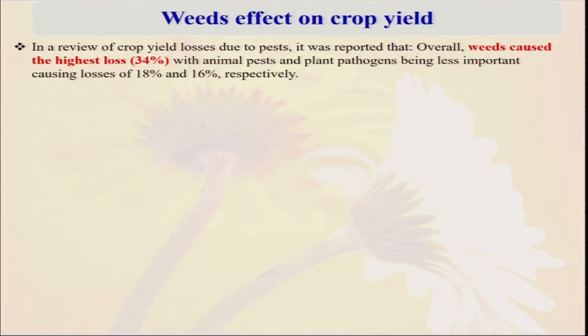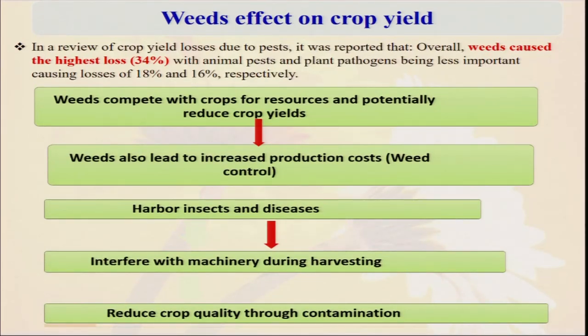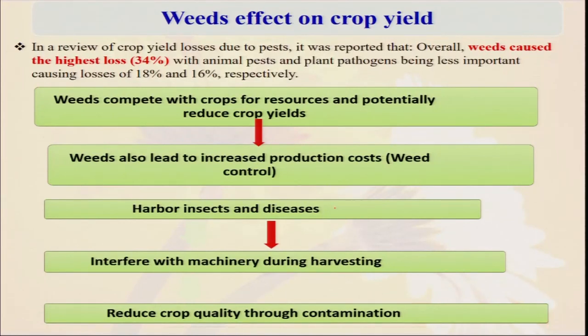Weeds effect on crop yield: about 34 to 37 percent losses as I have already told. Weeds cause major losses — they compete with crops for resources and potentially reduce crop yields. They also increase the production cost. How? You need labor, you need a mechanical weeder, you need a hoe, and in case of inorganic farming you need herbicides. So not only are they reducing the crop yield, but they are also increasing the cost of production. By two ways it is reducing — first yield is less, second cost of production is more — so our total profit will be much less. Similarly, they also harbor different types of insects and diseases, because they are staying in the burned area. When there is no crop in the field, different types of insect and disease spores stay in the weeds, and when we next grow a crop, they invade. So weeds also enhance insect pest and disease attack on the crops.